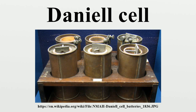Nevertheless, the Daniell cell provided a longer and more reliable current than the voltaic pile because the electrolyte deposited copper, which is a conductor, rather than hydrogen, which is an insulator, on the cathode. It was also safer and less corrosive, with an operating voltage of roughly 1.1 volts. It saw widespread use in telegraph networks until it was supplanted by the Leclanché cell in the late 1860s.